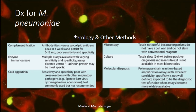For diagnosis of mycoplasma pneumoniae, methods include serology options such as complement fixation and enzyme immunoassays, as well as cold agglutination, microscopy, culturing, and molecular diagnosis. These details are from a medical microbiology textbook.